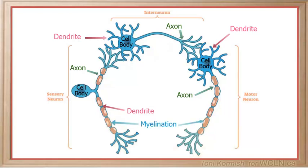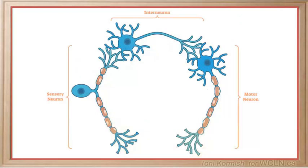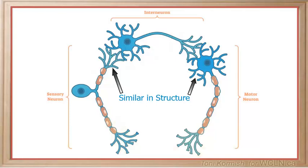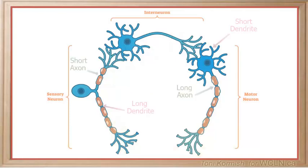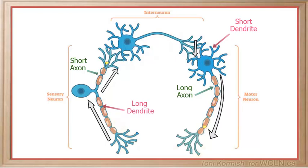However, when we compare the structure of sensory neurons to motor neurons, we can see that the sensory neuron has long dendrites and short axons, whereas the motor neurons have short dendrites and long axons. Notice that the dendrite on the sensory neuron looks very similar to the axon on the motor neuron, and that the axon on the sensory neuron looks very similar to the dendrite on the motor neuron. Remember that these structures are defined by their functions, not by their appearance. The function of the dendrite is to carry the nerve impulse toward the cell body, and the function of the axon is to carry the nerve impulse away from the cell body.